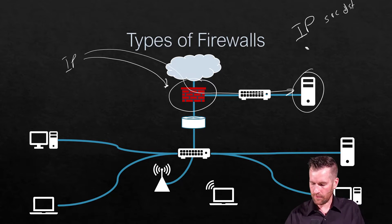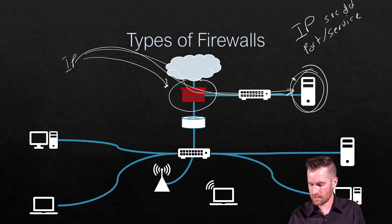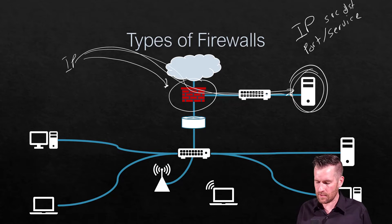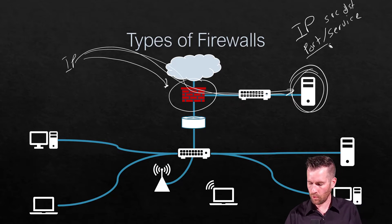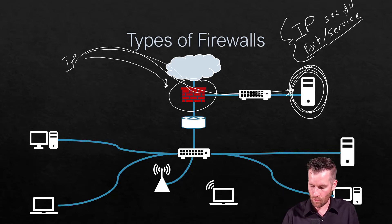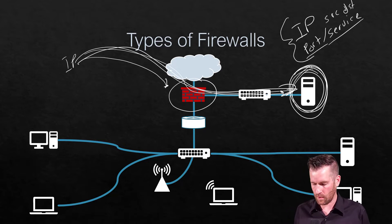Another way to filter is by port or service. For example, port 80 or port 443 traffic can be allowed into a web server in the DMZ. We can filter by port or service, and often we want to do both — specifying both the IP and the port for a specific web server.